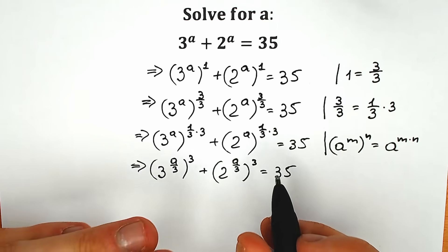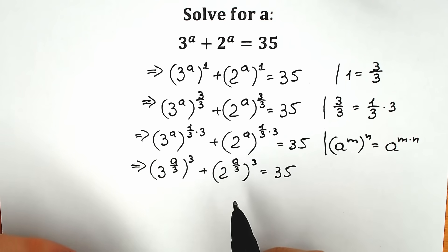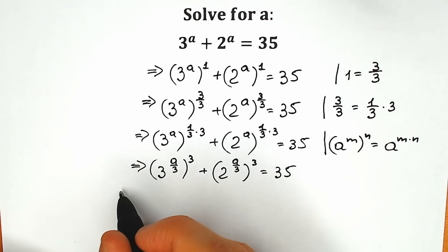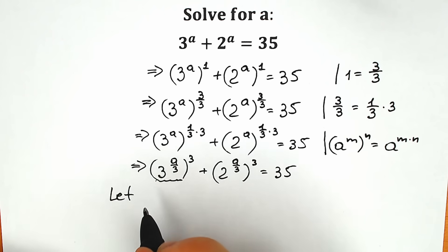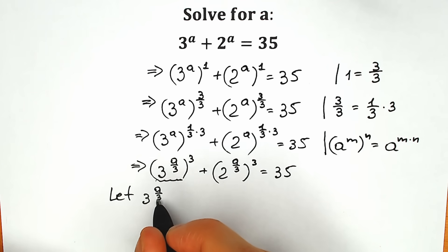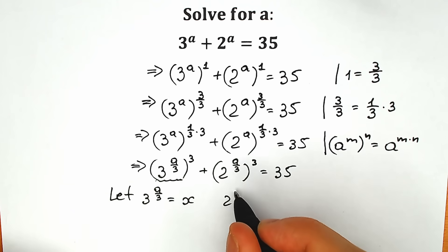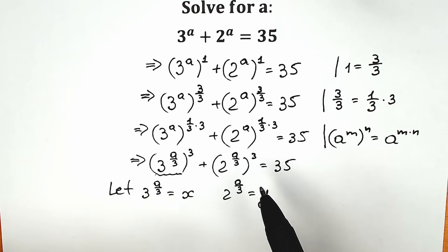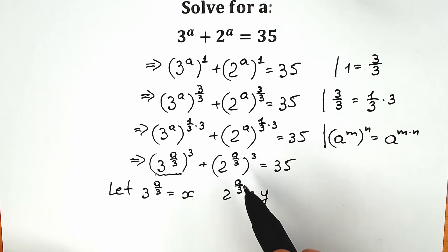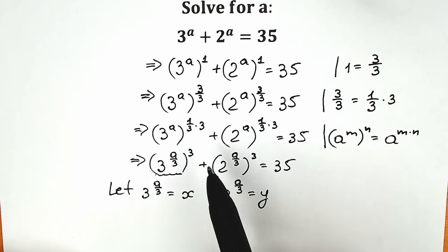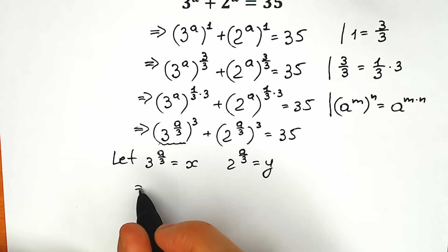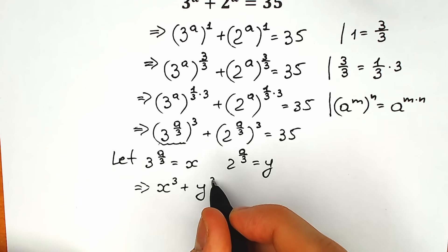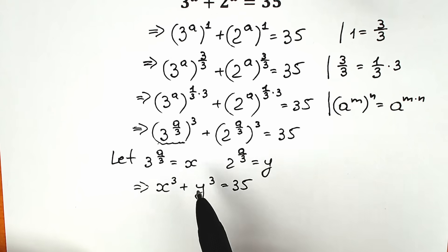Now we have a sum of two cubes, which is extremely important and easy to factor. For better understanding, let's write a substitution: let x equal 3 to the power a over 3, and y equal 2 to the power a over 3. So we have x cubed plus y cubed equals 35.